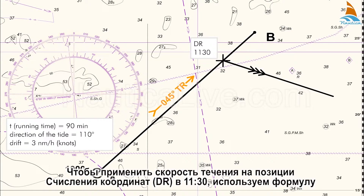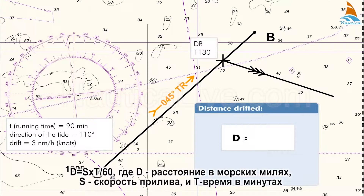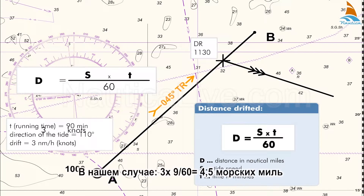To apply the drift — the speed of the tide — on the 1130 Dead Reckoning DR position to our time frame, we use the formula: d equals s times t divided by 60, where d is the distance in nautical miles, s is the tide speed, and t is the time in minutes. In our case, 3 knots times 90 minutes divided by 60 equals 4.5 nautical miles.